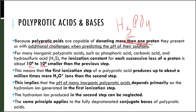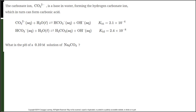That's huge. That means that the first ionization step of a polyprotic acid produces up to about a million times more hydronium ions than the second step. This implies that the pH of many inorganic polyprotic acids depends primarily on the hydronium ion generated in the first ionization step. The hydronium ion produced in the second step can be neglected. And the same principle applies to the fully deprotonated conjugate bases of polyprotic acids. Let's look at an example here.